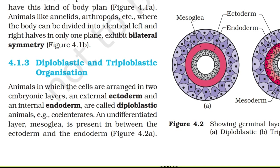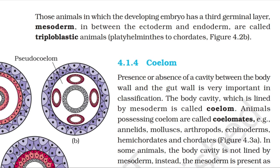Topic 4.1.3: Diploblastic and Triploblastic Organization. Animals in which the cells are arranged into two embryonic layers — an external ectoderm and an internal endoderm — are called diploblastic animals. Example: cnidarians. An undifferentiated layer, mesoglea, is present between the ectoderm and endoderm. Those animals in which the developing embryo has a third germinal layer, mesoderm, in between the ectoderm and endoderm, are called triploblastic animals — from Platyhelminthes to chordates.